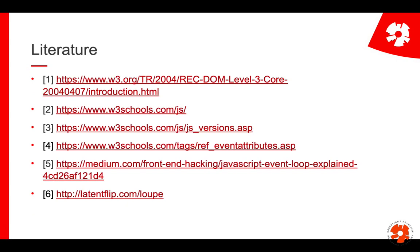The literature for this module is lots of references for looking up different things. The first one is an old specification of the DOM — the document object model — mainly here for reference because it has a quite nice summary of what the DOM actually is. Then W3Schools is linked with three different links: the general JavaScript tutorial, a little bit on the history of different versions and what is supported right now, and a reference on the different event attributes in HTML that you can use to trigger JavaScript. The last two links go into the event loop and JavaScript execution — one explains how it works and the other is a simulation tool where you can actually look at how the code works.